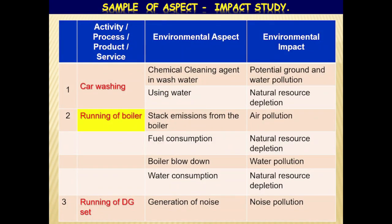Some examples of how to list out the details of aspects in a study. In the first column, you need to identify the activities in the process, products and service. In the middle column, you need to write down the appropriate aspects against the activity identified. In the last column, you must write down the environmental impacts against the individual aspects. Now let's take one common example in the industry. One main activity in the process is running a boiler, shown in yellow color background.